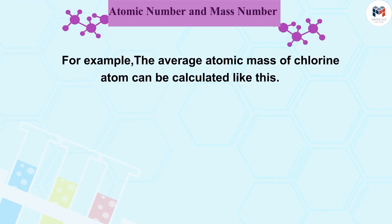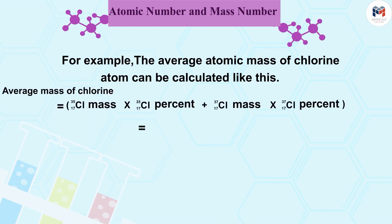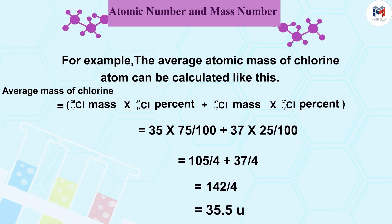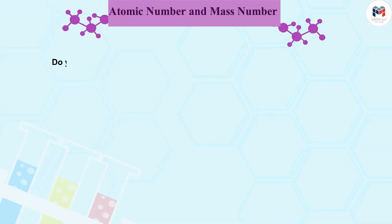the average atomic mass of chlorine atom can be calculated like this. This means that if we take some quantity, it will have isotopes of chlorine and the average mass will be 35.5.